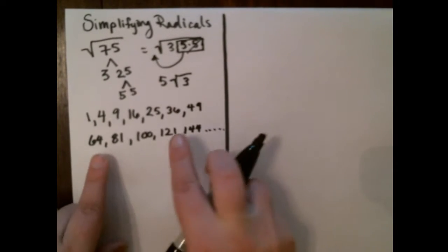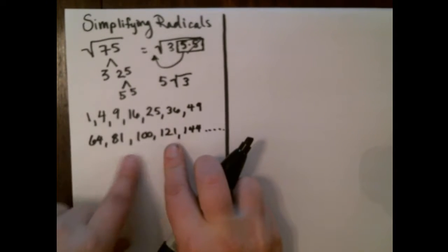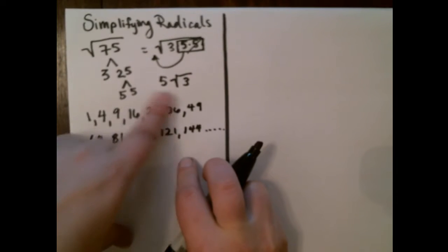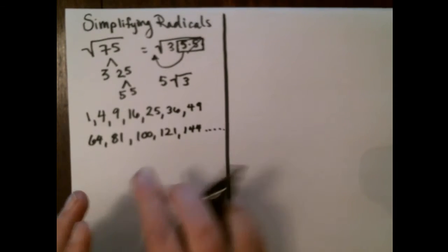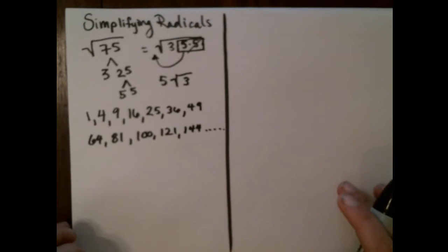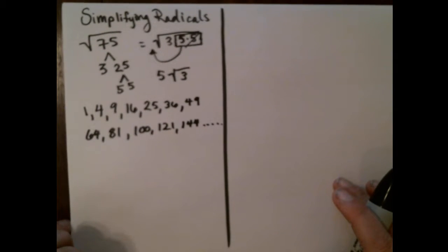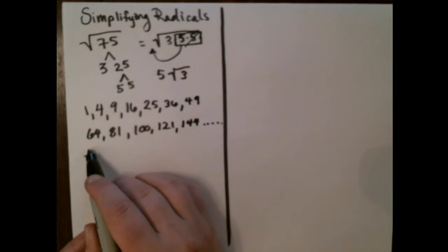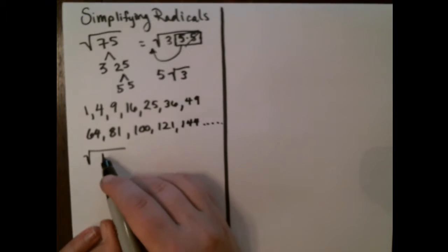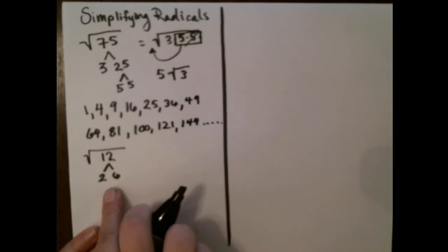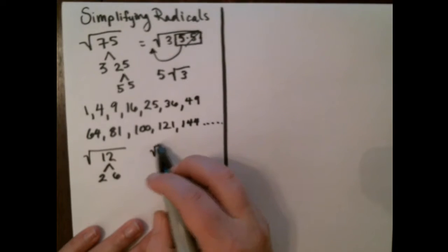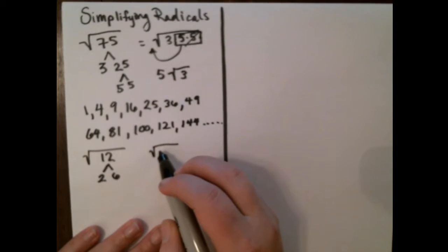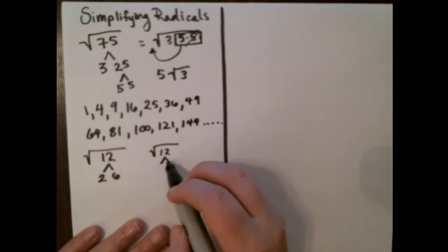We could obviously keep going forever, but these are the numbers you're trying to get to because these are perfect squares. So if you ever have those numbers, you just want to break it down so that it's exactly the same number. For example, I could break down 12 in a couple of different ways. I could break it down as 2 and 6, and that's not wrong.